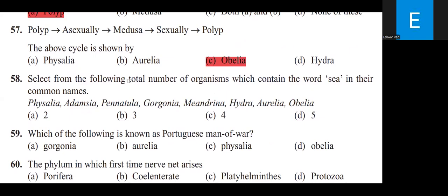Select the total number of organisms that contain the word 'Sea' in their common names from: Physalia (Portuguese Man of War), Adamsia (Sea Anemone), Pennatulia (Sea Pen), Gorgonia (Sea Fan), Meandrina (Brain Coral), Hydra (Freshwater Polyp), Aurelia (Jellyfish), Obelia (Sea Fur). Adamsia = Sea Anemone, Pennatulia = Sea Pen, Gorgonia = Sea Fan — therefore the answer is option C, three organisms.